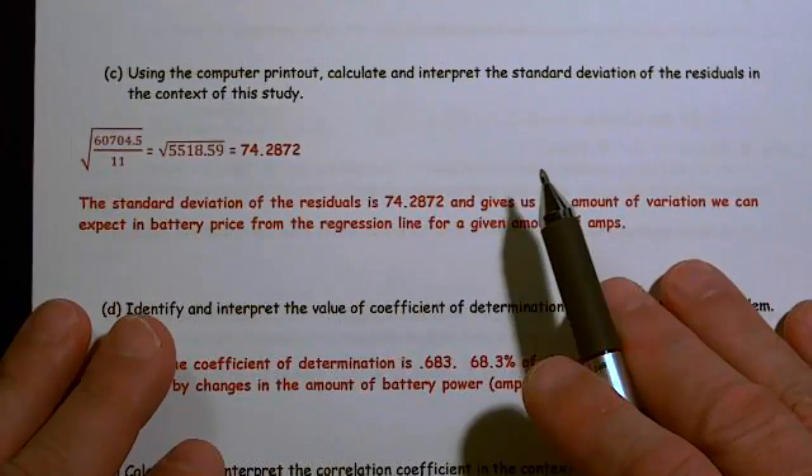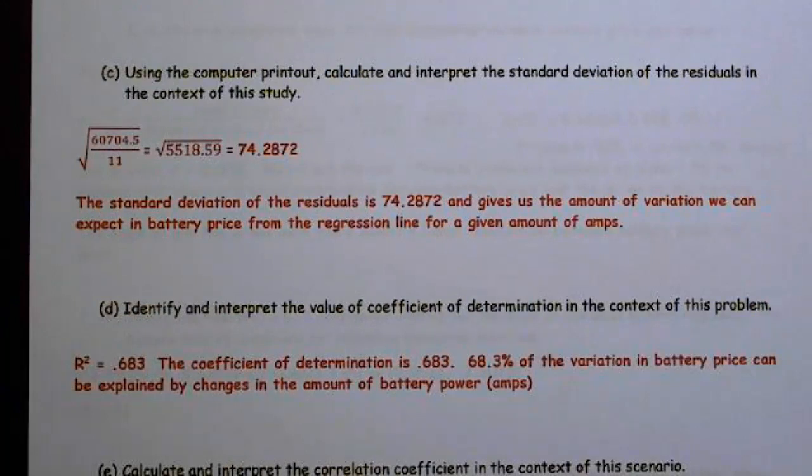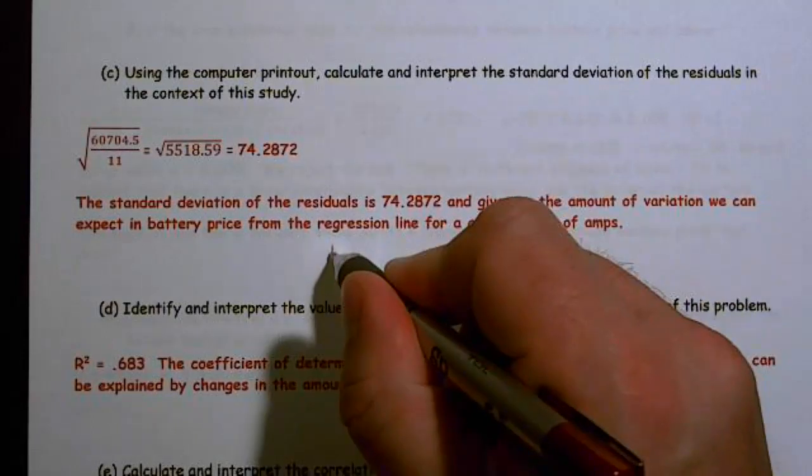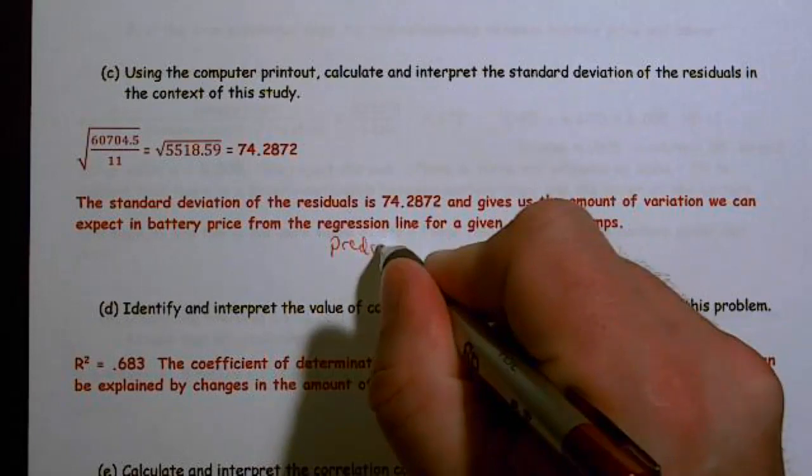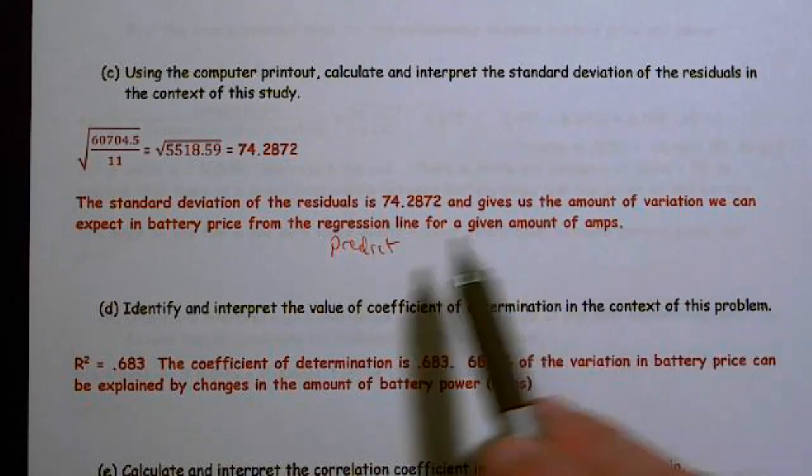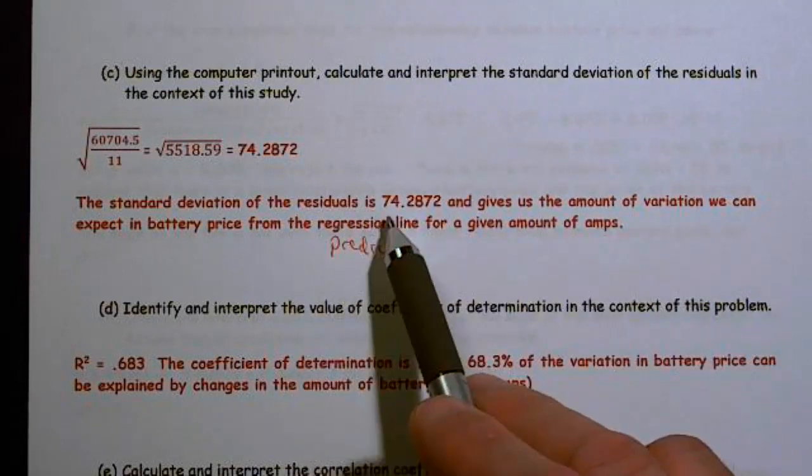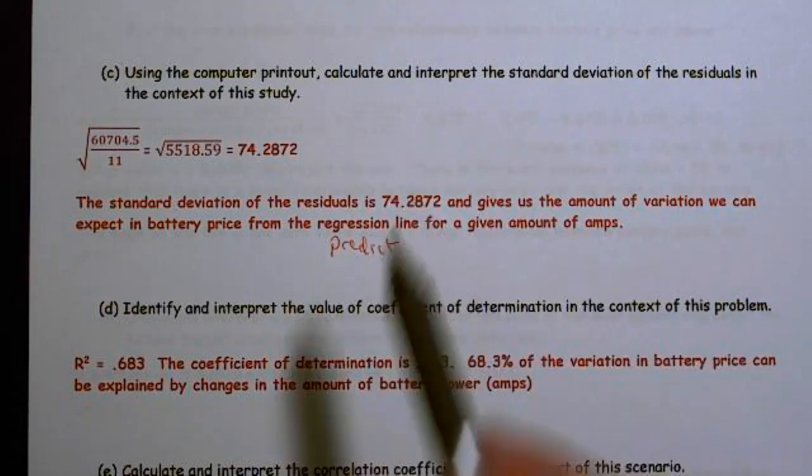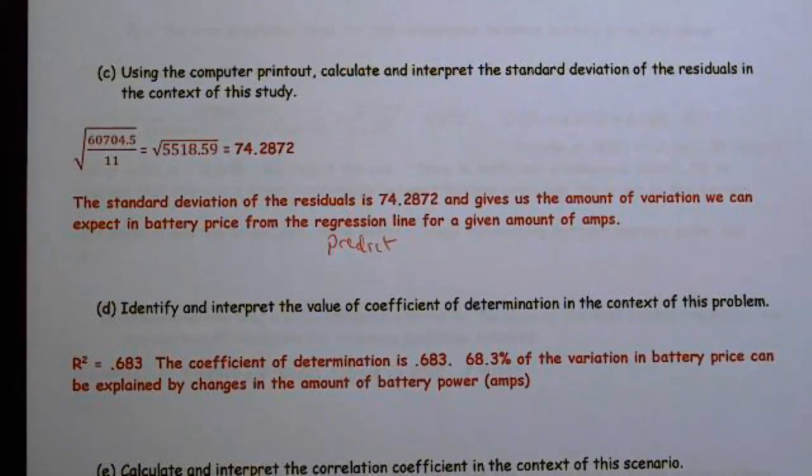So the standard deviation of the residuals is 74.28 and gives us the amount of variation we can expect in battery price from the regression line for a given amount of amps. So basically, how much variation from what we predict? Because the regression line is our prediction line. So for a given amount of amps, we expect 74.28 as our amount of variation.